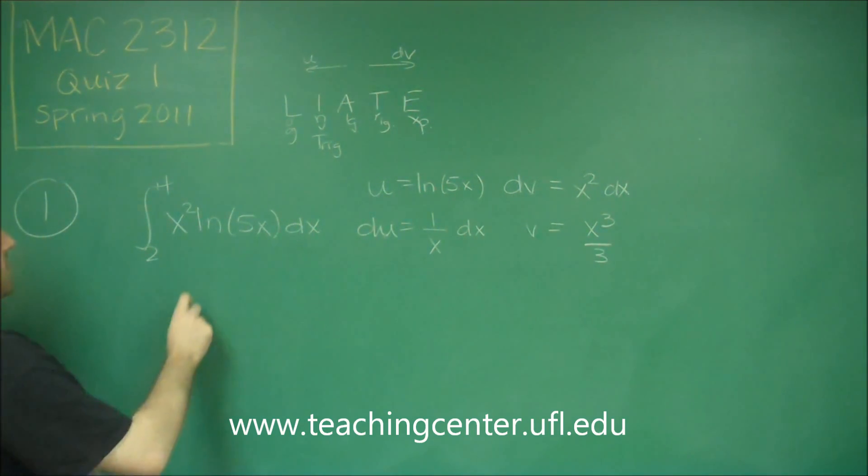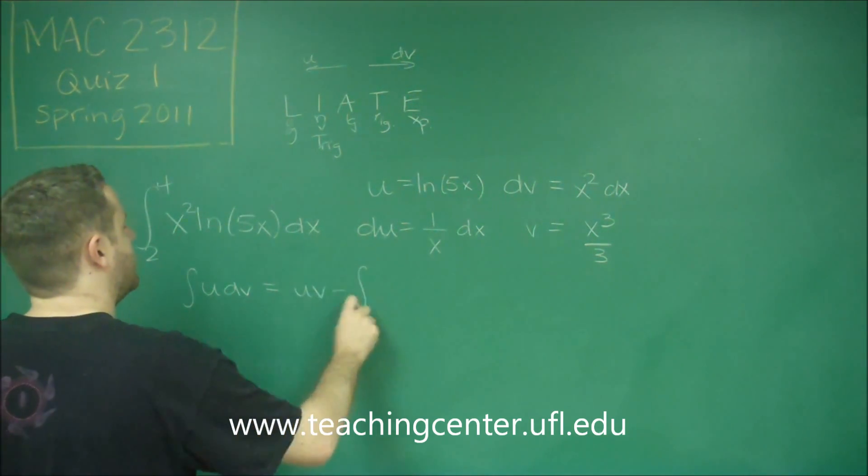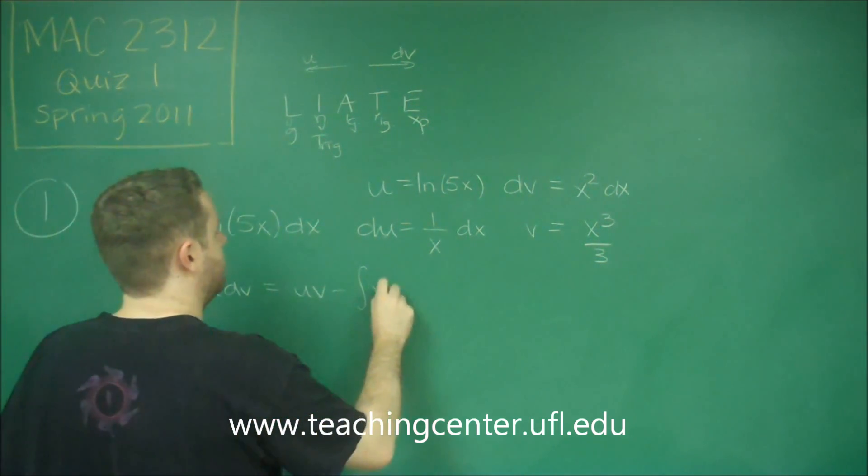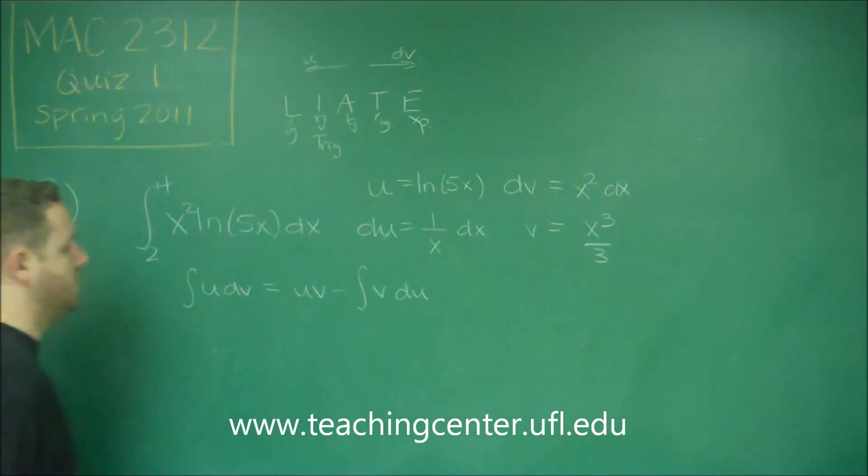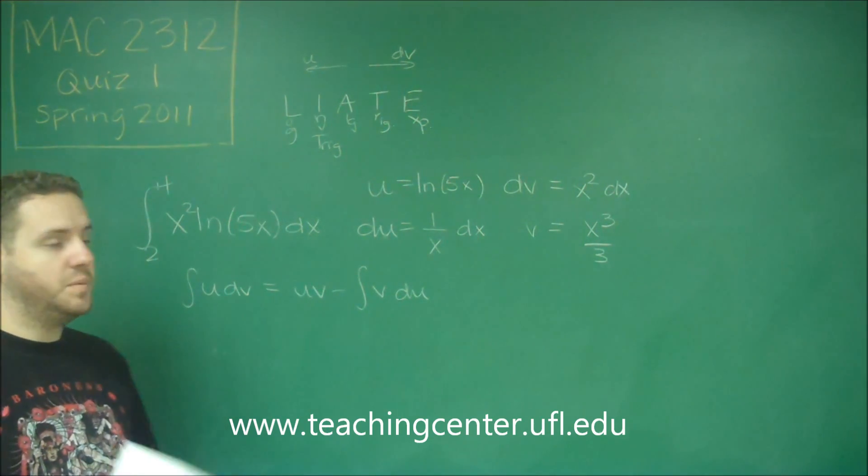Now with integration by parts, remember you always follow the formula. The integration of U dv is equal to uv minus the integral of v du. So we had our U dv set up there already. Now we just need to follow this formula.